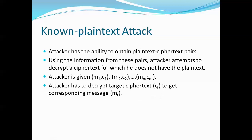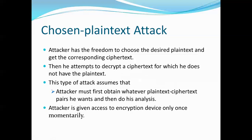In a chosen plaintext attack, the attacker has the freedom to choose desired plaintexts — such as 'apple', 'mango', or 'cat' — and obtain the corresponding ciphertexts. After collecting the plaintext-ciphertext pairs he wants, he is then given a target ciphertext and must find the corresponding plaintext. The attacker is given access to the encryption device only once to gather all the pairs he needs before doing his analysis.